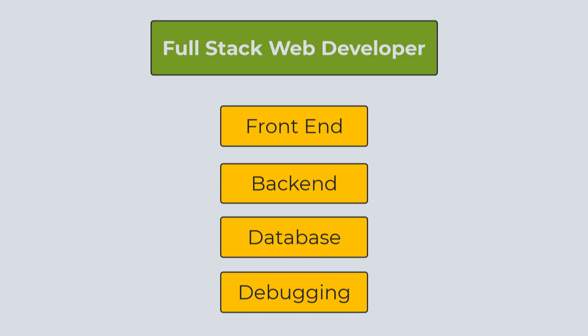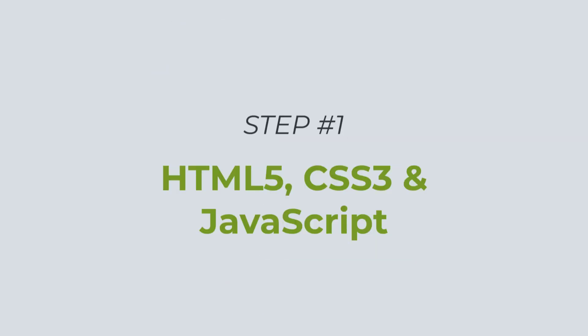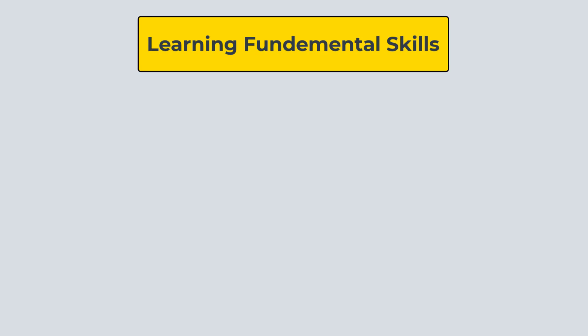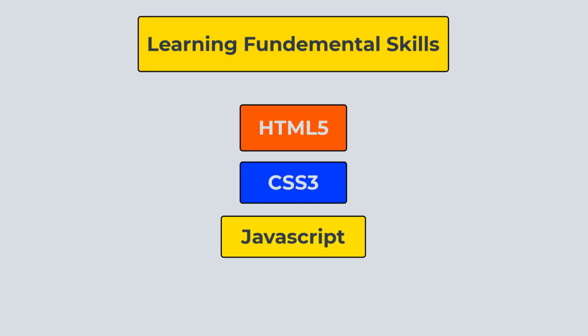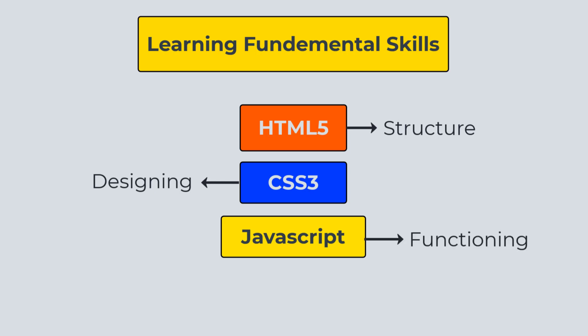In order to become a full stack web developer in 2023, you can follow this roadmap. So without wasting more time, let's get started. The first step is to learn the most fundamental skills: HTML, CSS, and JavaScript. HTML stands for HyperText Markup Language and is used to build the structure of a website. CSS stands for Cascading Style Sheets and is used for styling and beautifying a website. JavaScript is the programming language of the web and deals with the working and functioning of the website.